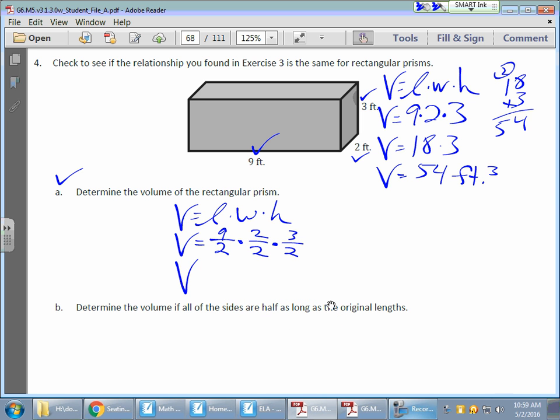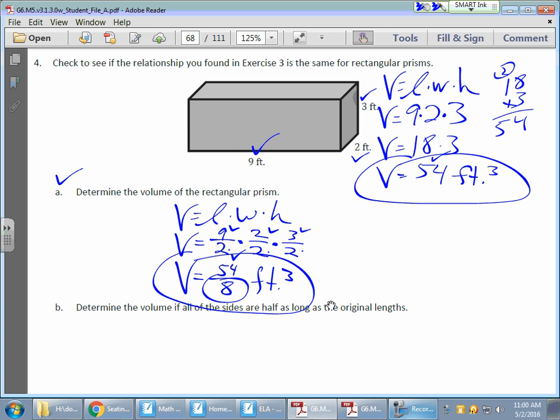Now, if I multiply those out, I'm going to have 9 times 2 times 3 again, which is my 54. And then I'm going to have 2 times 2 times 2, which is 8. 54 over 8 feet cubed. Now, taking a look at this answer compared to this answer, I notice I have my 54s are the same. But this one is 54 divided by 8. So how did I go from taking half of each dimension to dividing that original volume by 8?